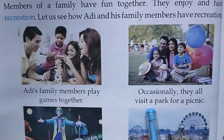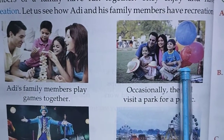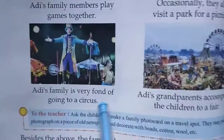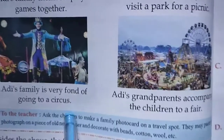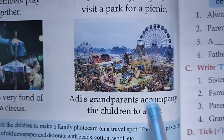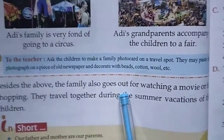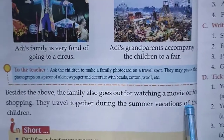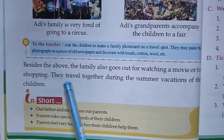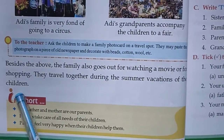Adi's family members play games together. Occasionally they all visit a park for a picnic. Adi's family is very fond of going to a circus. Adi's grandparents accompany the children to a fair. Besides the above, the family also goes out for watching a movie or for shopping. They travel together during the summer vacations of the children.